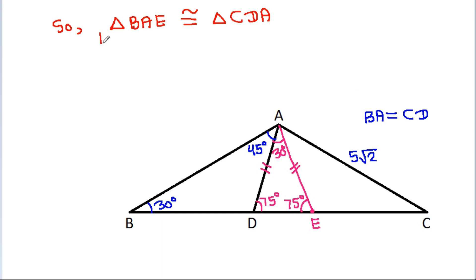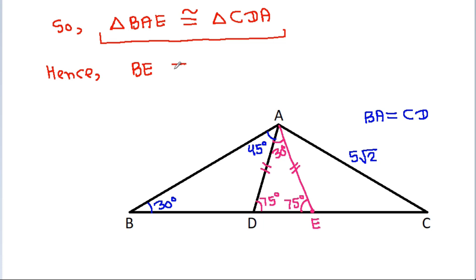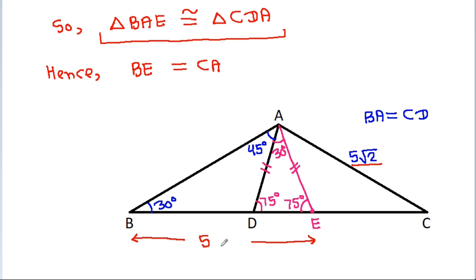Since these two triangles are congruent, BE will be equal to CA. And CA is 5 times the square root of 2, which means BE equals 5 times the square root of 2.